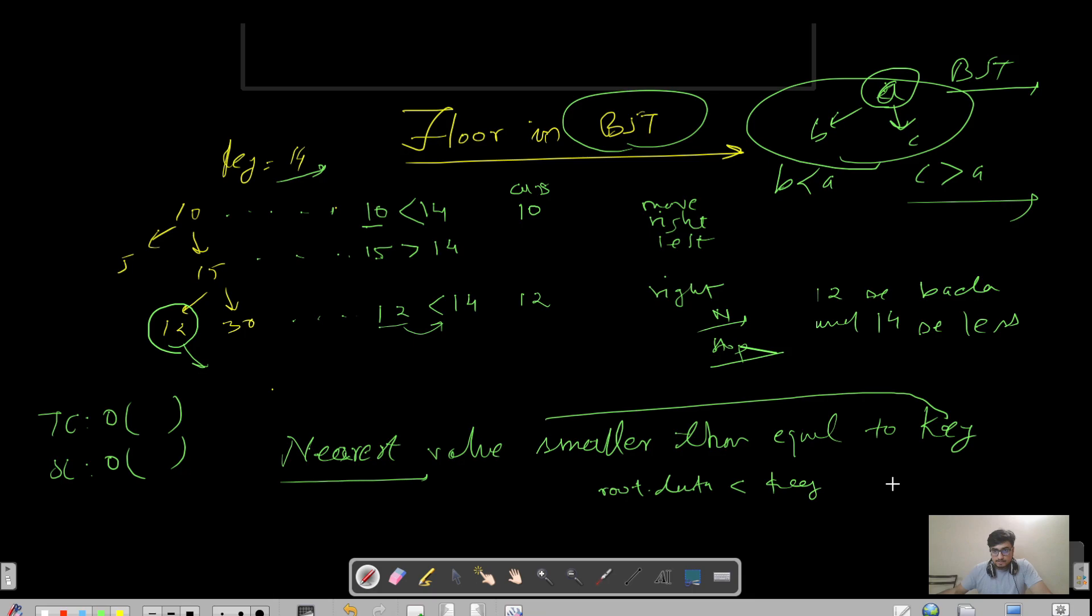In this case I will just say result equals to root and I will move in right direction, so root equals to root.right.